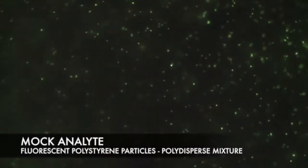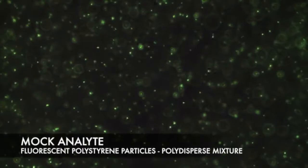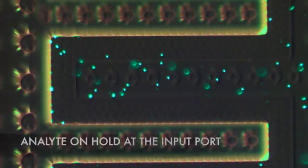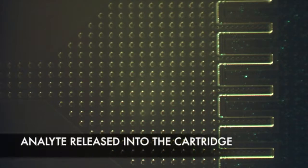Let's take a look at what's going on inside the actual measurement cartridge with the help of some fluorescent particles. So here you see the analyte on hold at the input port. The structure to the right is the filtering mechanism that's used to filter out particles that are too large for the nanoconstriction.